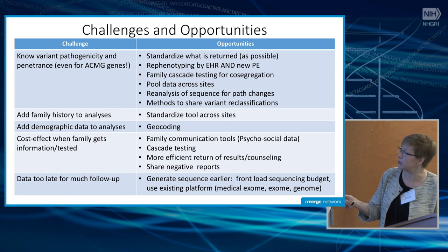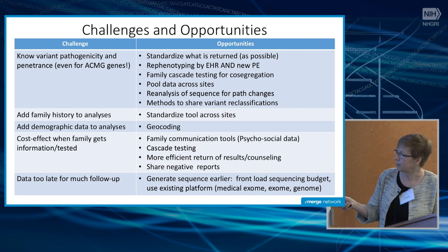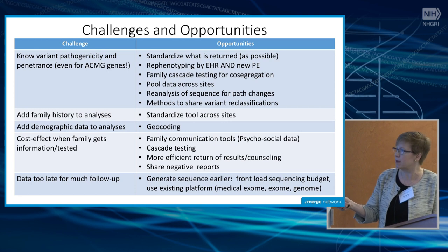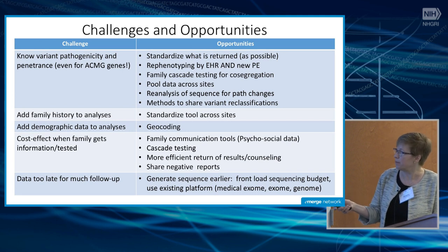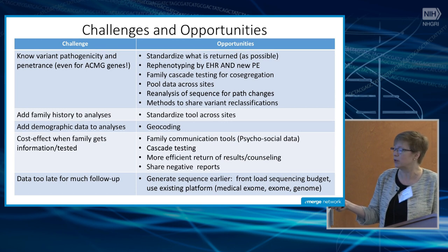Adding family history to analyses requires standardized tools across sites, and you could expand that to wearables, apps, and other things. Adding demographics — geocoding is going to be a big opportunity. We can get ancestry from our principal components. It is cost-effective when family members get tested. So family communication tools, psychosocial data, cascade testing, and more efficient ways of returning results are all priorities.